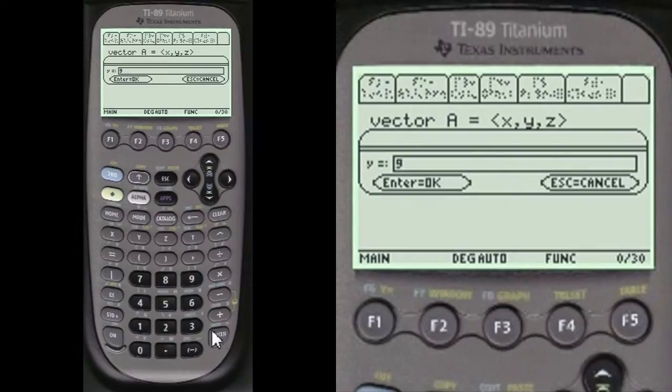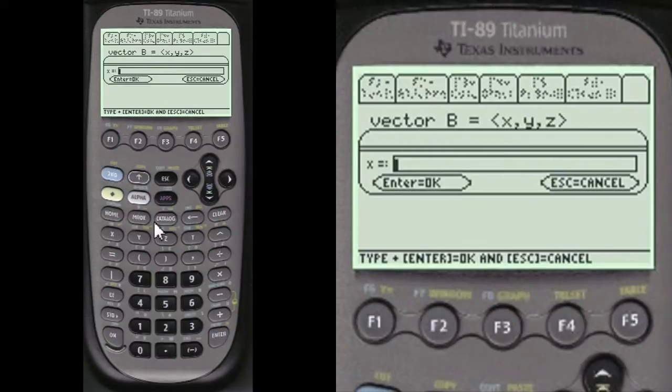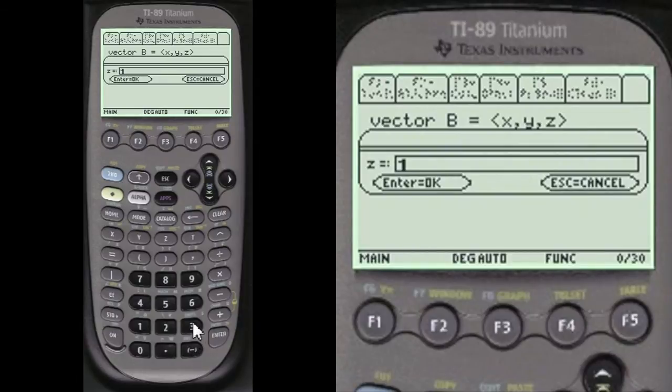Alpha 9, alpha minus 4. That's vector A. Vector B is alpha minus 7, alpha 8, alpha minus 3.